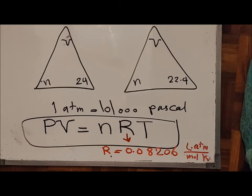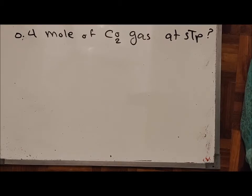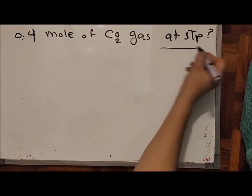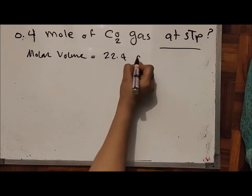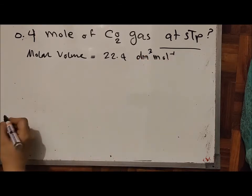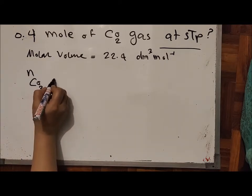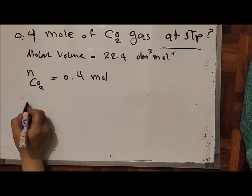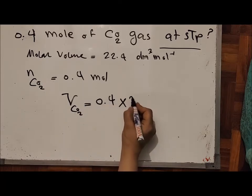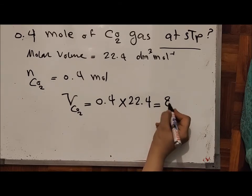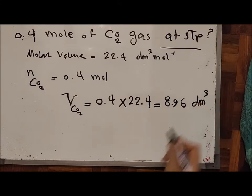Example 1: What is the volume of 0.4 moles of carbon dioxide gas under STP? Under STP, molar volume equals 22.4 dm³/mol. Number of moles of CO₂ is 0.4 mol. Volume = 0.4 × 22.4 = 8.96 dm³.